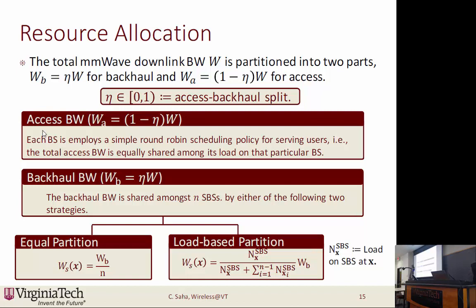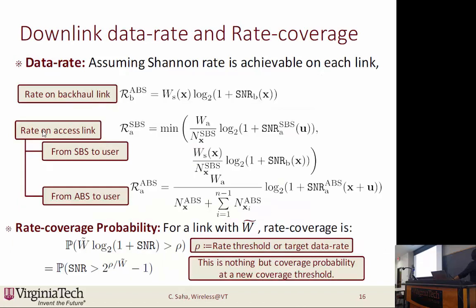For the backhaul bandwidth WB, we assume two partition policies. In equal partition, WS_X — the share of the backhaul bandwidth allocated to the base station at location X — is simply WB/N, since there are N hotspots in the macro cell. In load-based partition, WS_X is proportional to the load on that particular small cell base station, normalized with respect to the total load across all small cell base stations.